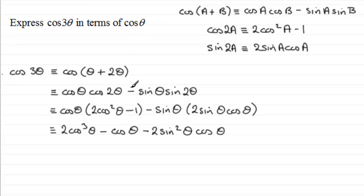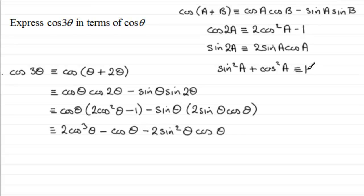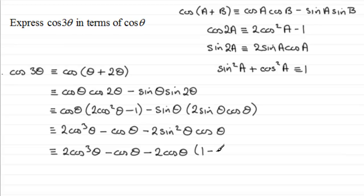We still have sin²θ in that last term. Using the Pythagorean identity sin²θ + cos²θ = 1, we can rearrange to get sin²θ = 1 − cos²θ. Substituting this in, we write the term as −2cosθ·(1 − cos²θ).